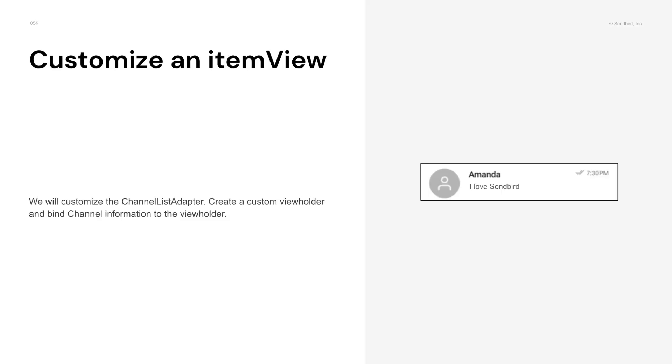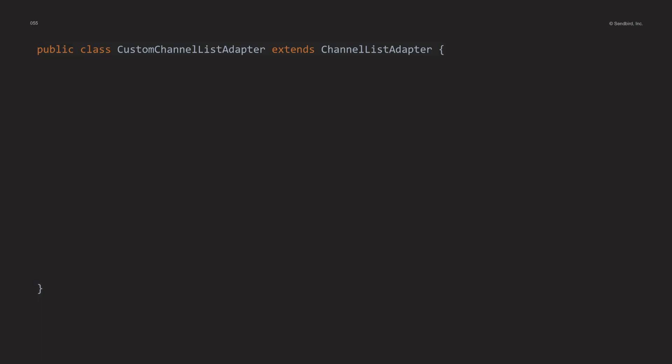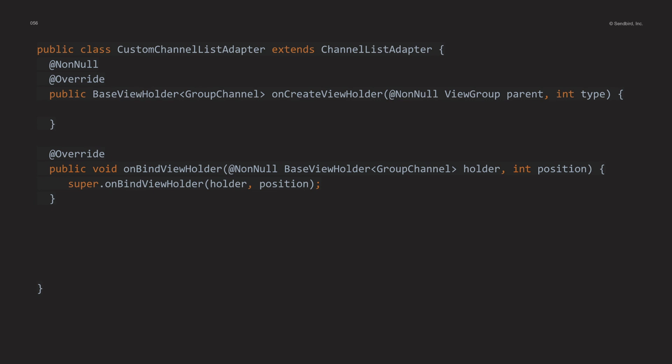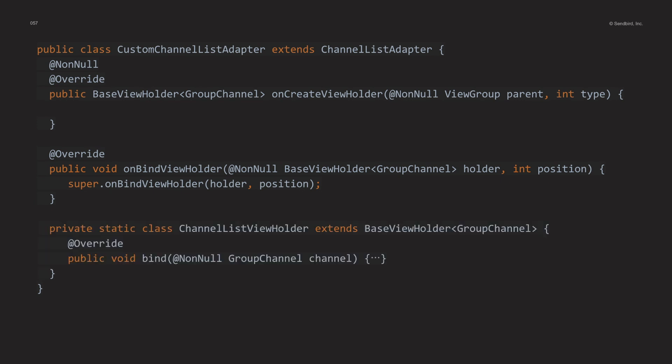Let's customize the item view. Create custom channel list adapters by inheriting the channel list adapter. Override the onCreateViewHolder and onBindViewHolder methods similar to how you would implement the Android RecyclerView adapter. Declare a class that inherits BaseViewHolder to create a custom item view. BaseViewHolder needs to specify a data type, which is passed as a parameter to the bind method. Create and return a custom view holder in onCreateViewHolder. In the case of onBindViewHolder, if you use a super call, the bind of BaseViewHolder is invoked, so you do not need to implement any additional code other than the super call.